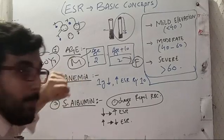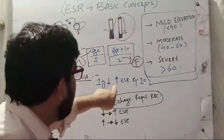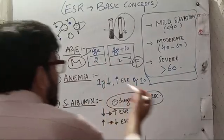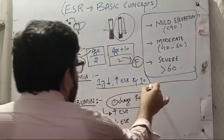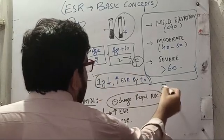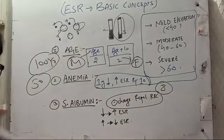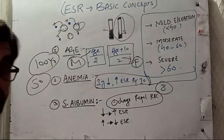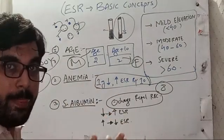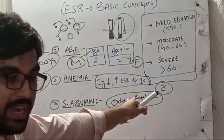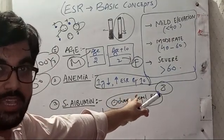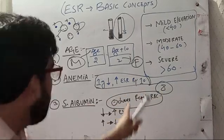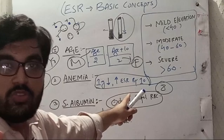For anemia, one gram decrease in hemoglobin increases ESR by 10. This is very important. For example, a patient has hemoglobin of 8. This decreased from the standard of 13, so the patient has a 5-point drop in hemoglobin. One drop increases ESR by 10, so that's 50.